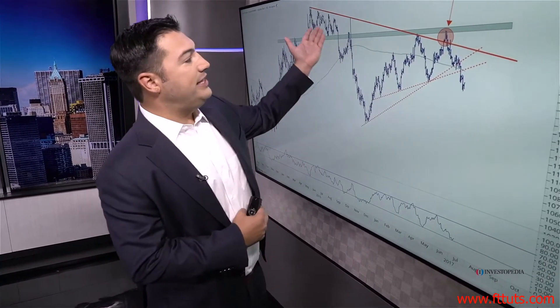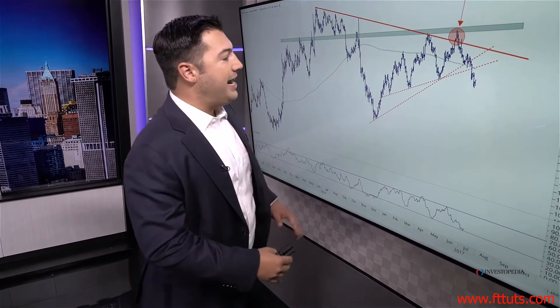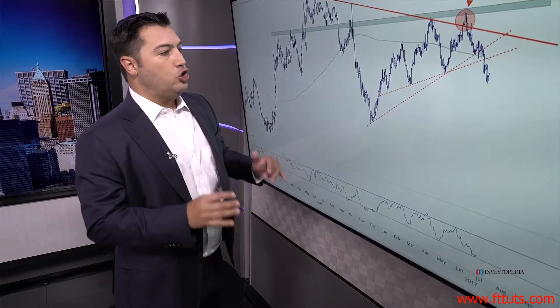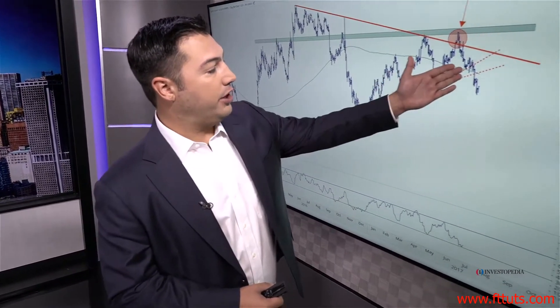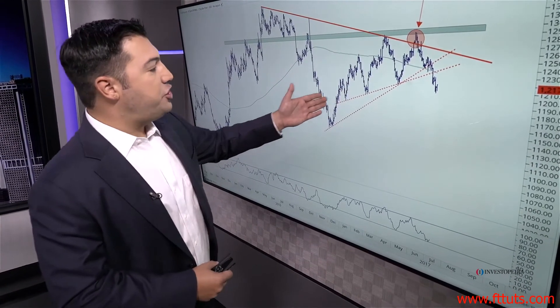Not only did gold not hold the breakout above the downtrend line, but now we're breaking the uptrend lines going back to the lows in 2016. Don't be afraid to draw multiple trend lines, and don't be afraid to erase a trend line and draw a new one. In this case, we have an uptrend line from the December lows in gold that has broken, and a less steep uptrend line from the January lows in gold that also broke.